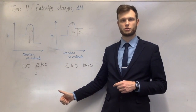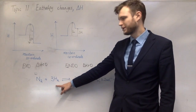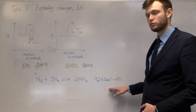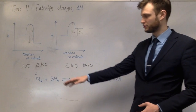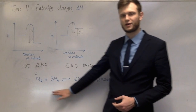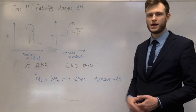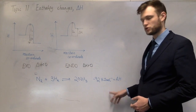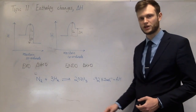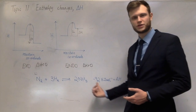For example, in the Haber process one mole of nitrogen reacts with three moles of hydrogen to make two moles of ammonia, and the enthalpy change for one mole of that reaction is minus 92 kilojoules. If I wrote it as 2N₂ plus 6H₂ makes 4NH₃, the enthalpy change would be twice as much — minus 184 kilojoules. So the stoichiometric coefficients matter when quoting an enthalpy change of reaction.